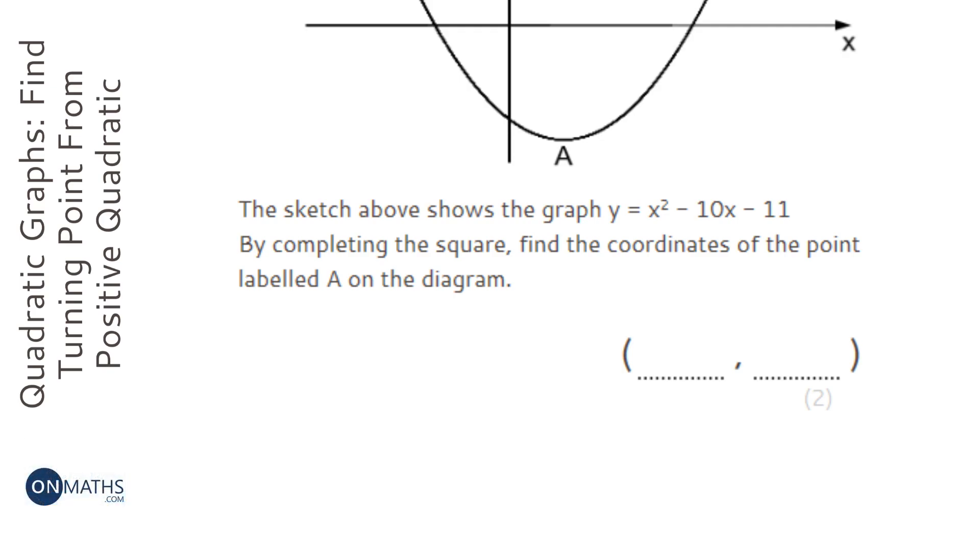To complete the square, first of all you look at this section here and we're going to put that into brackets and put a square on the outside. So the way to do this is you get the square root of the first one, which is just x, take away half of the coefficient of the x, which is 5, and then square it.